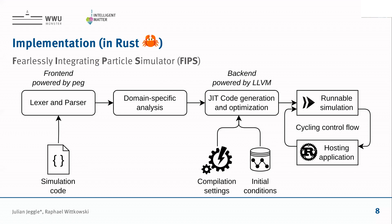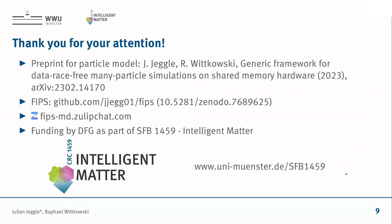Just very quickly on the implementation: we call it the Fearlessly Integrating Particle Simulator. It's basically your textbook compiler. We use the really excellent Rust PEG crate for prototyping a parser, and then feed it into LLVM to generate code. From the user perspective, it's just a Rust library. We actually use Rust as our escape hatch, because we can cycle control in LLVM between our generated code and the Rust application — so you can do all your pre- and post-processing in Rust. You can find a paper and the software linked here. Thank you.